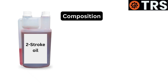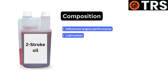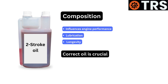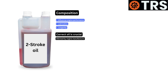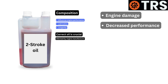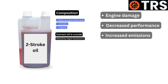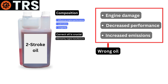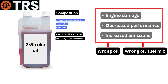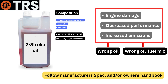Because the composition of the two-stroke oil directly influences engine performance, lubrication, and longevity, it is crucial to use the right kind of two-stroke oil as advised by the engine manufacturer. Engine damage, decreased performance, and increased emissions can result from the use of the wrong oil or from using the wrong oil-to-fuel ratios. Always follow the manufacturer's instructions or the owner's handbook for your individual two-stroke engine.